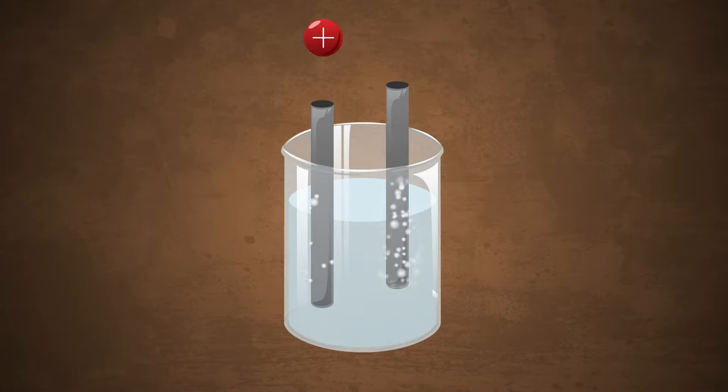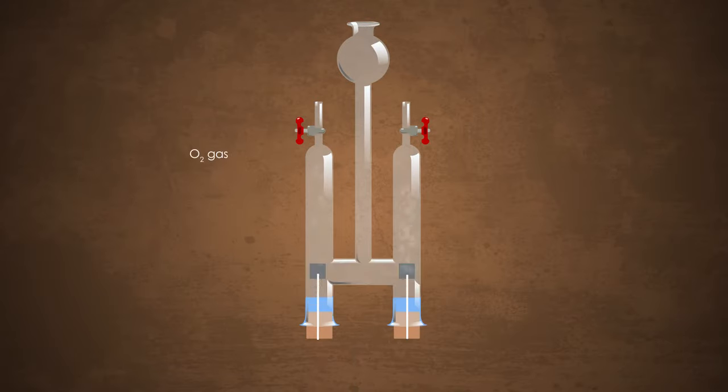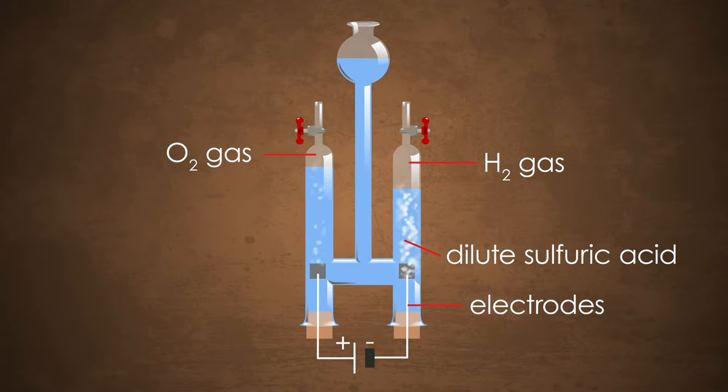If we use electrolysis we will see bubbles forming around both electrodes, the most around the cathode. If we use a Hoffman voltameter, we can collect the gases made by each electrode.